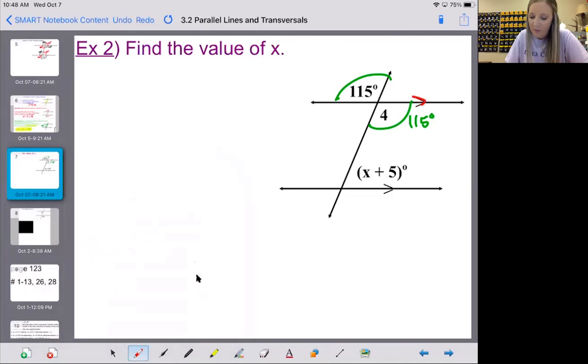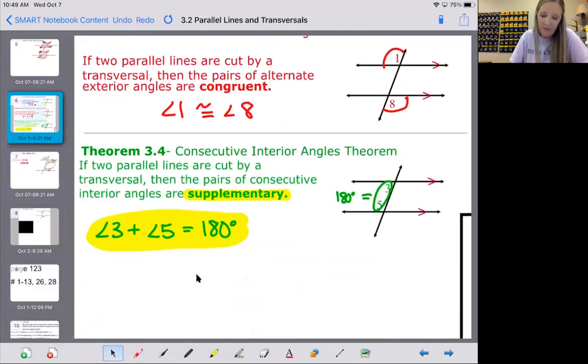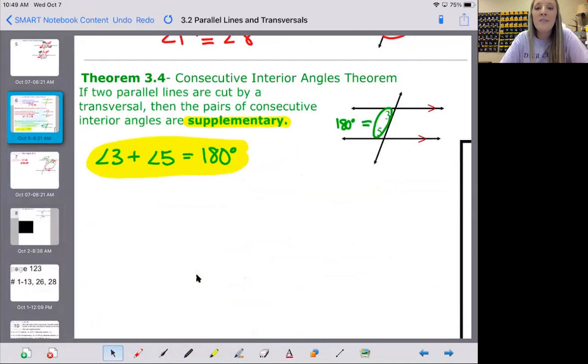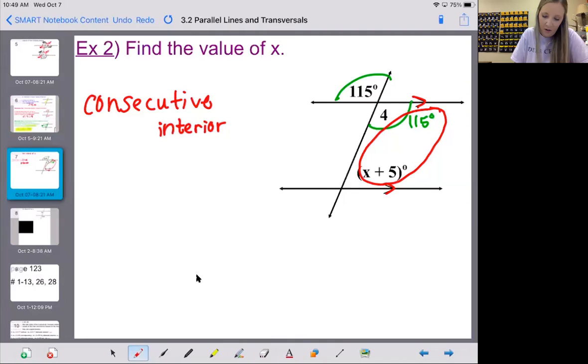Also take notice we have parallel lines, which is awesome because if we have parallel lines, we can use all those theorems we were just looking at. If you look right here, I can circle these, which tells me they are consecutive interior. And if they're consecutive interior, remember that's the weird one, consecutive interior angles are supplementary. They equal 180 total degrees. So I need to take the 115 and I need to add that to the X plus five.